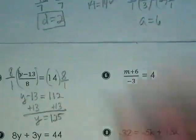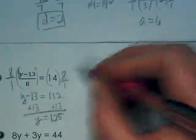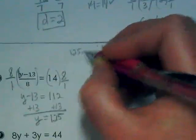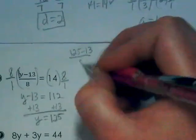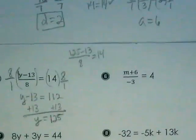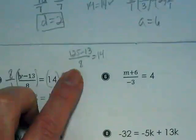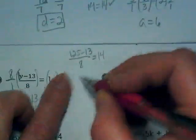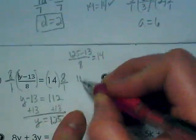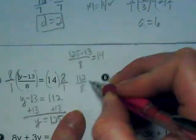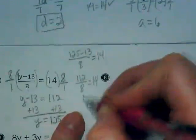How do I check this? I'm going to do 125 minus 13 divided by 8. Is it equal to 14? We're going to simplify the fraction. What's 125 minus 13? 112 divided by 8, and it does equal 14.